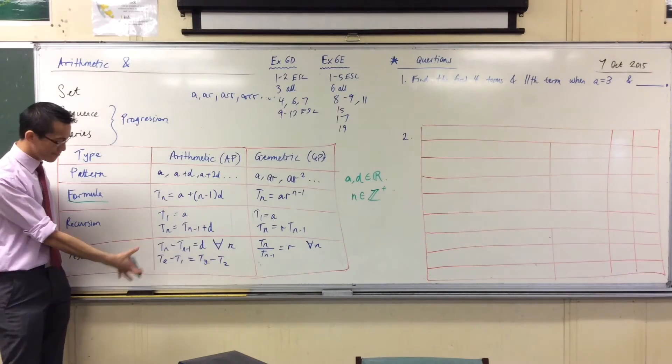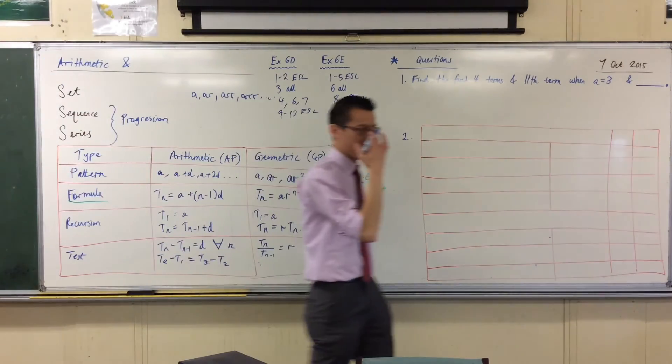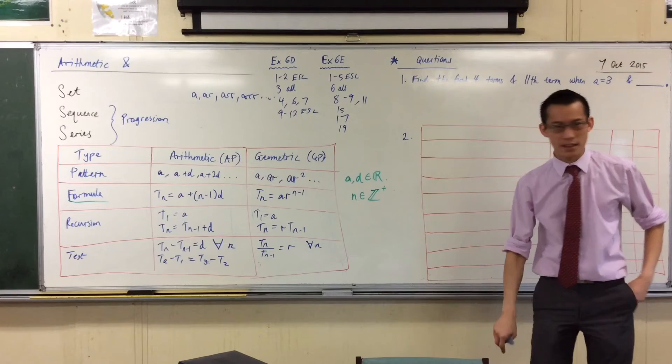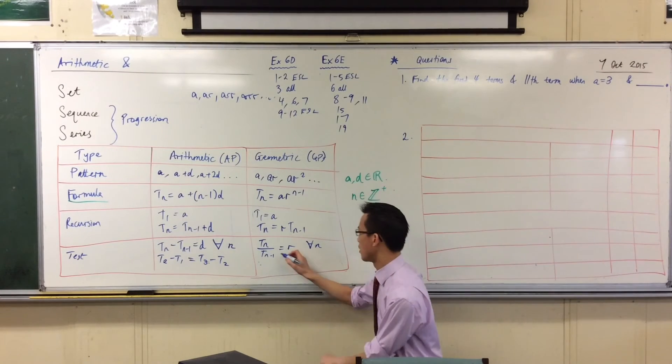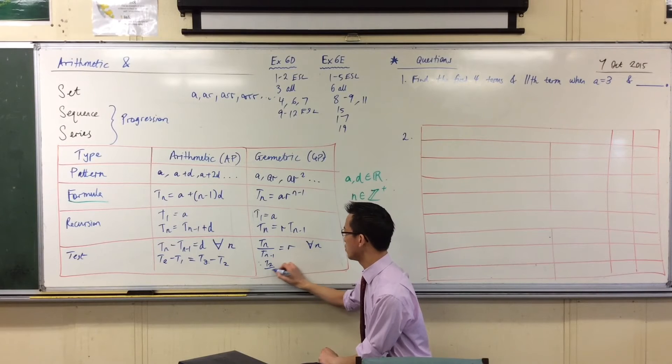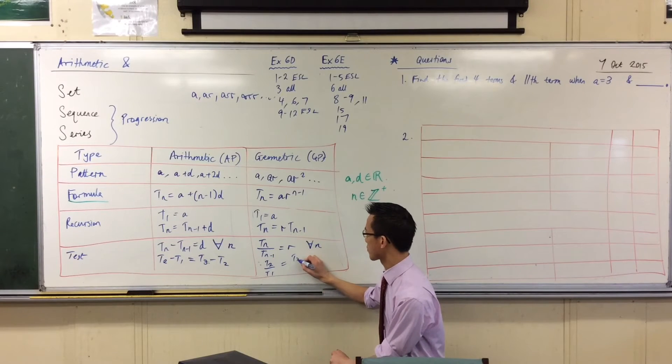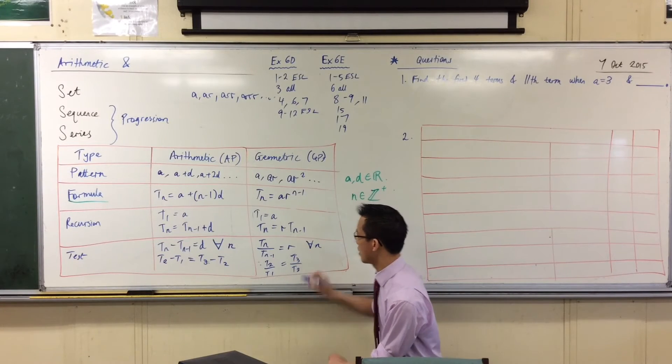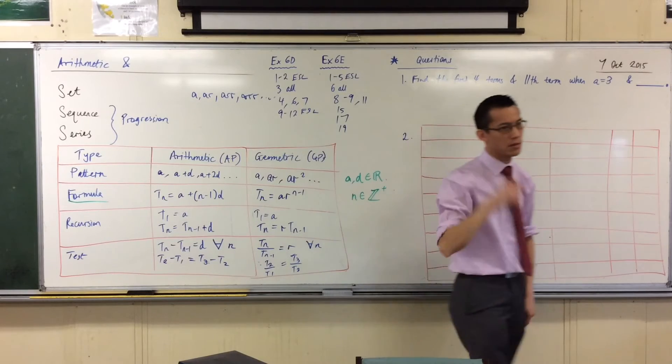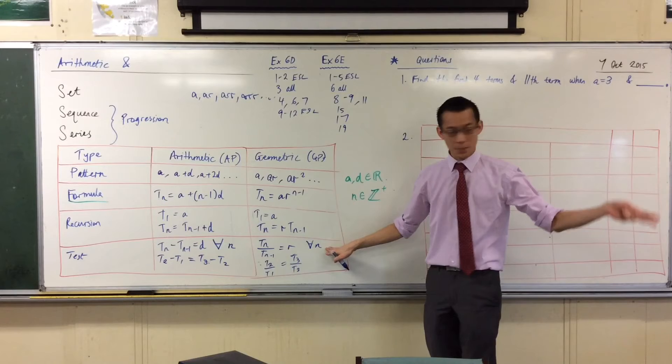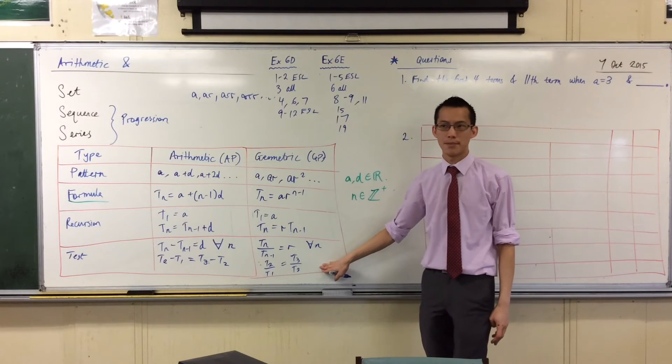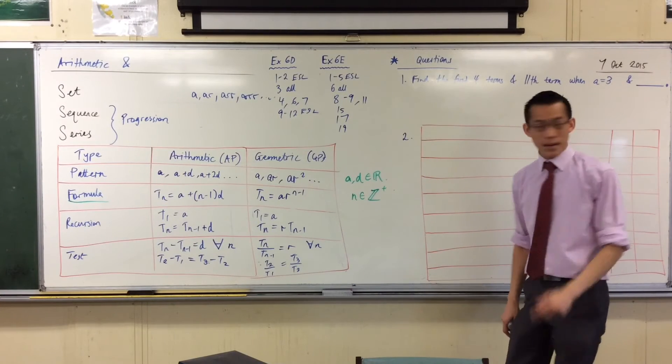Now, just like before, you're pretty much going to get three terms. So therefore, in reality, what you're checking is the first pair and the second pair. You want to check that those ratios line up. In other words, that term two divided by term one is the same as term three divided by term two. So this is what it is generally speaking, but this is pretty much what you'll do each time.